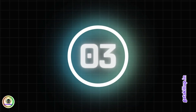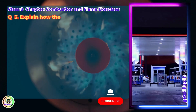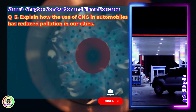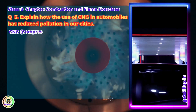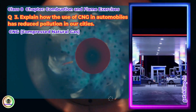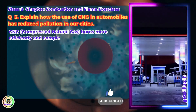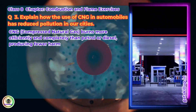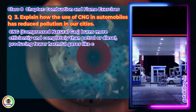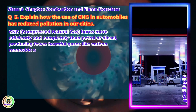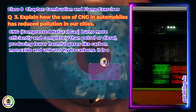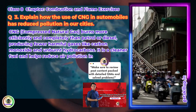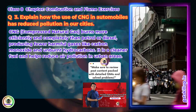Question 3: Explain how the use of CNG in automobiles has reduced pollution in our cities. Answer: CNG (Compressed Natural Gas) burns more effectively and completely than petrol or diesel, producing fewer harmful gases like carbon monoxide and unburned hydrocarbons. It is a cleaner fuel and helps reduce air pollution in urban areas.